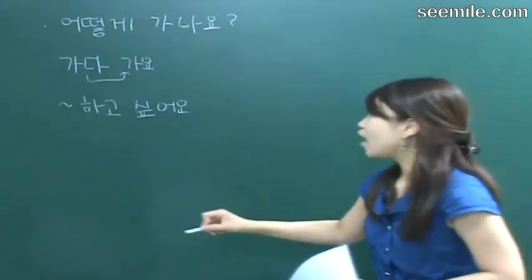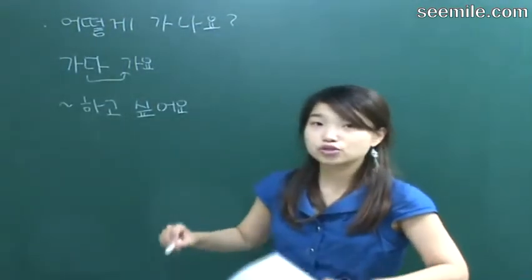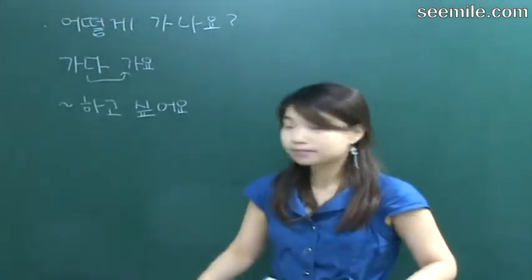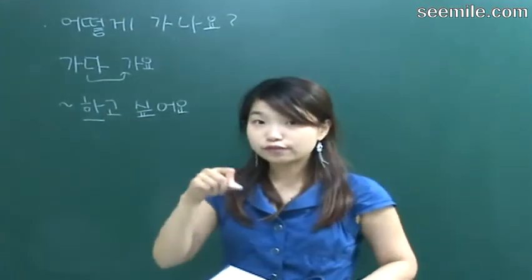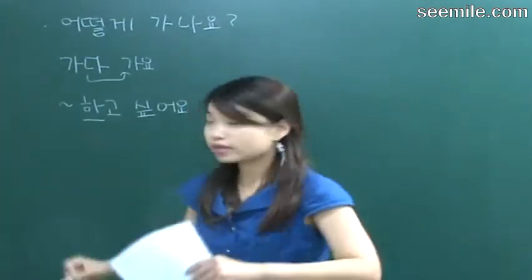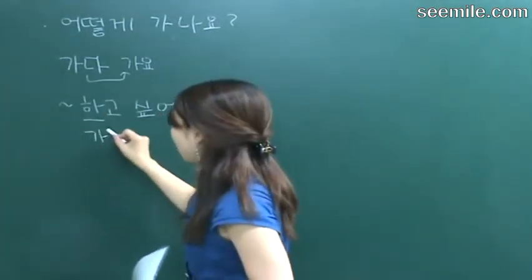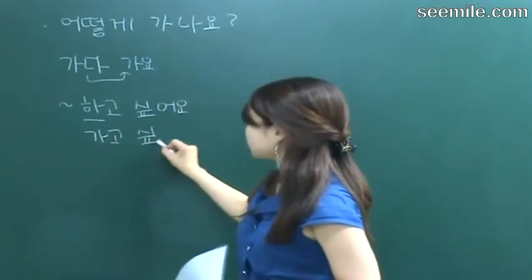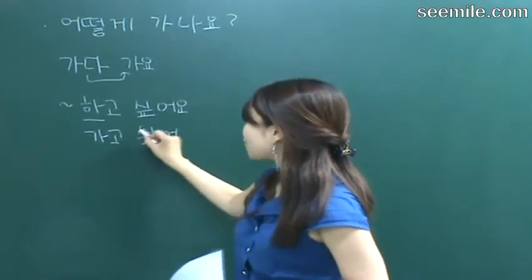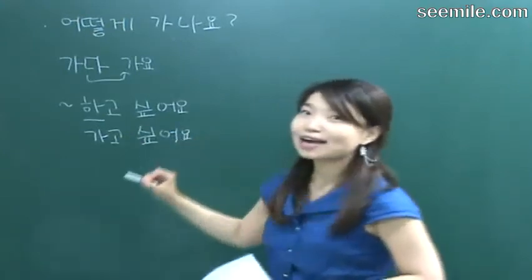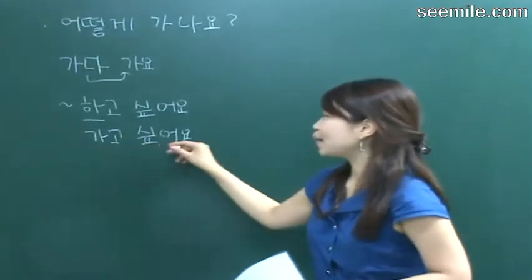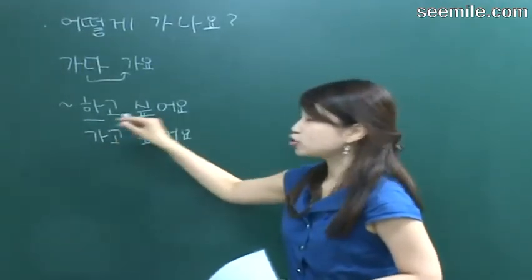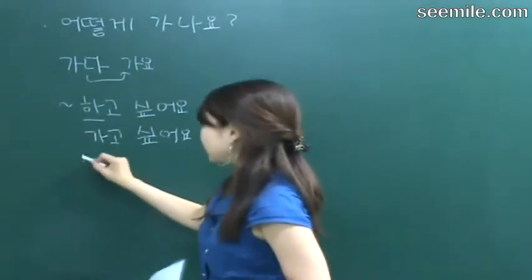뭐뭐하고 싶어요. For example: 학교 가고 싶어요 — I want to go to school. 먹고 싶어요 — I want to eat. Here you can put the verb form like 가다, so 가 + 고 싶어요. I want to go. I want to do. I want to eat.